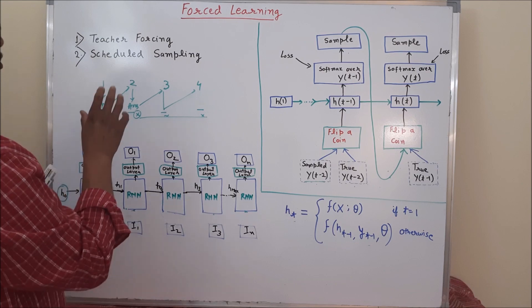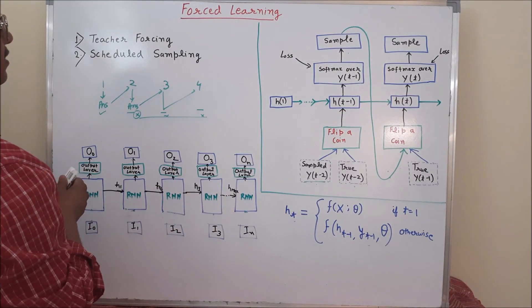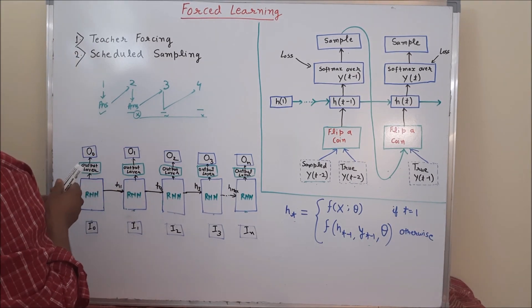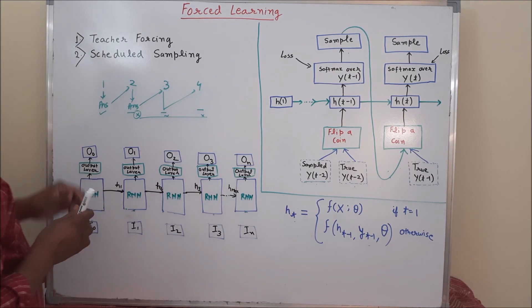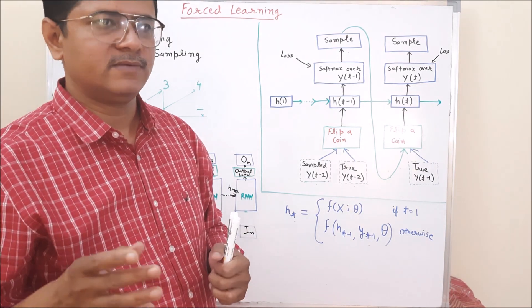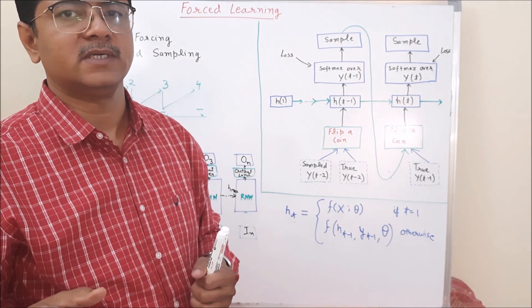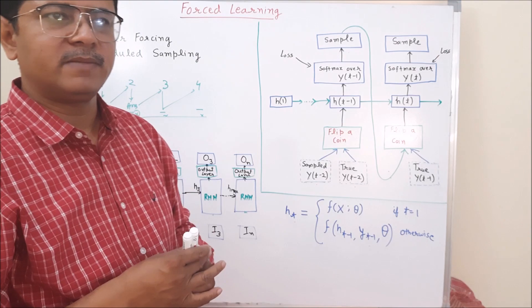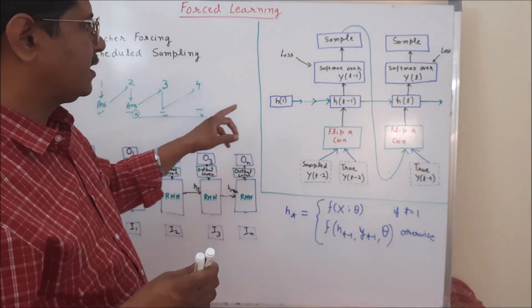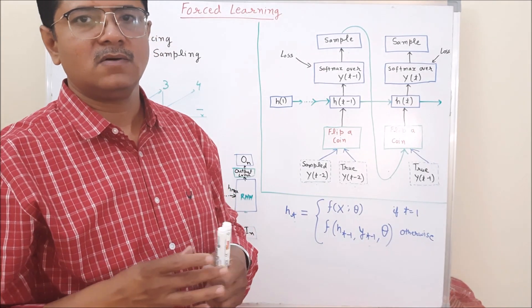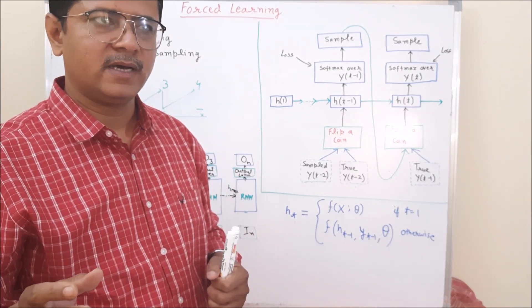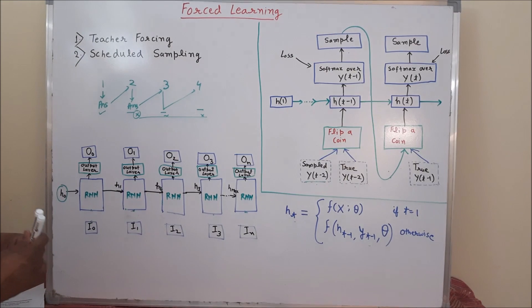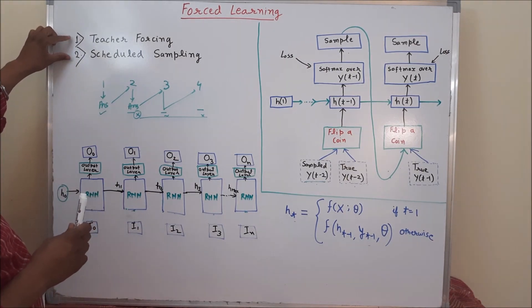In such kind of sequences, to avoid propagation of such kind of error, we generally use forced learning. So, the proposed methods for forced learnings are teacher forcing, scheduled sampling and one other method which is also very popular that is professor forcing. But the professor forcing algorithm actually uses generative sampling based features. That is why we are not covering in this discussion. We will cover this in next section with generative adversarial networks. So, now here we just covered teacher forcing and scheduled sampling.